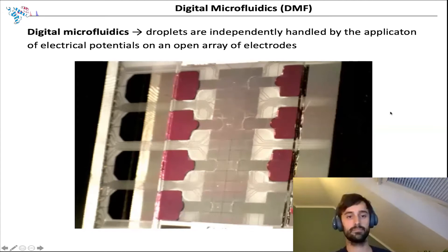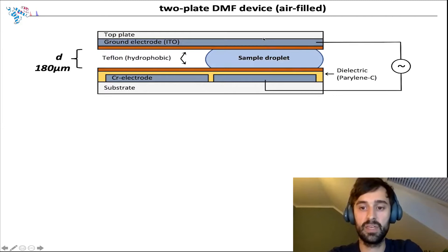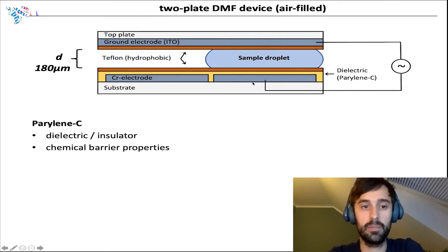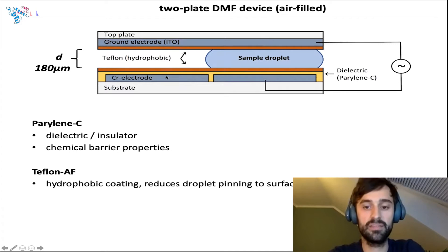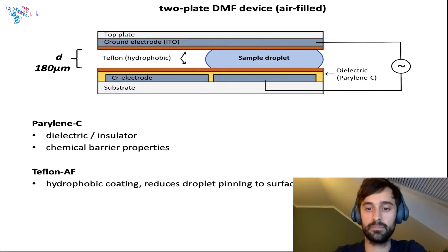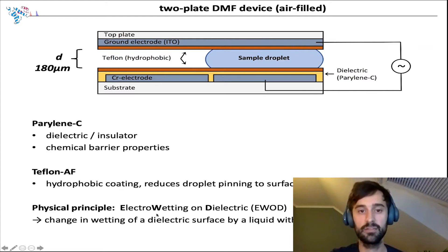The DMF chip is a so-called two-plate DMF device. The two plates are arranged in a way that forms a gap in between, where the sample is essentially sandwiched and incubated. The chip consists of a bottom substrate made of glass and electrodes. On these electrodes, a dielectric coating is applied. The top plate is made of an ITO glass slide. Both plates are coated with hydrophobic Teflon AF, which prevents any droplets sticking. To move the droplet sandwiched between the two plates from one electrode to another, the electrodes are actuated by an AC potential, with the top plate always put to ground.